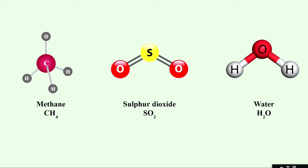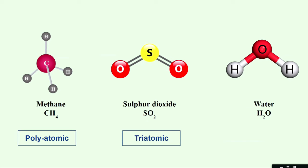Here are some new examples. The first is methane gas — the formula is CH₄, meaning it is made up of one carbon atom and four hydrogen atoms, so totally there are five atoms, making it polyatomic. Sulfur dioxide is made up of three atoms, so the term is triatomic. And for water, there are also three atoms, so it is triatomic. I hope with all these examples, the term atomicity and how to classify each molecule is very clear.